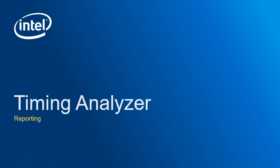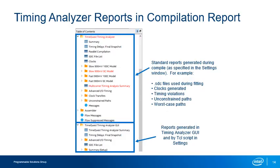Before discussing SDC constraints in detail, let's take a closer look at some of the reporting options available in Timing Analyzer. Before looking at reports in Timing Analyzer, let's look at reports that appear in the Intel Quartus compilation report. Here you can see the basic timing reports generated by the tool during compilation. Notice the multiple timing model report folders within the Timing Analyzer report folder. Multi-corner analysis performs timing analysis for all timing models supported by the targeted device. Each timing model folder includes summary reports with the worst case positive or negative slack displayed for each clock domain in the design.